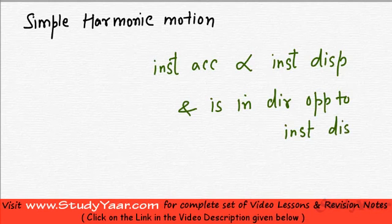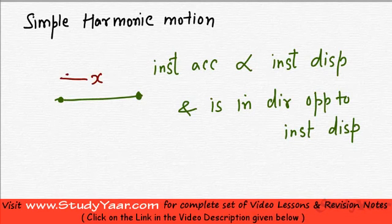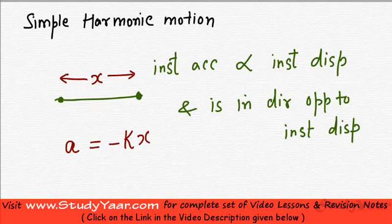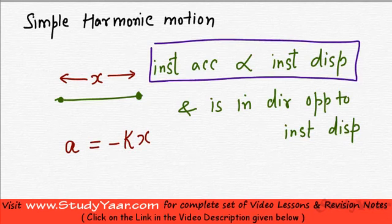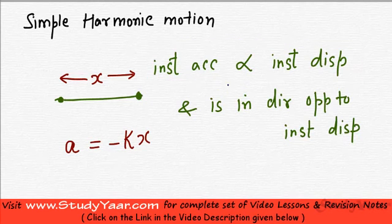So if this is my reference point and I am over here, let's suppose this is x. Then my acceleration would be given by minus kx. Look, my instantaneous acceleration is proportional to instantaneous displacement, so I would have a is equal to kx.